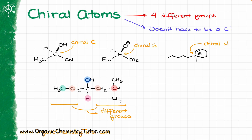So for instance in this case, it looks like my left group and my right group are no different from each other because they are just two CH₂s, but later on in the molecule I have two completely different side chains, which does make those two groups different overall. So the carbon in the middle, that one is very much chiral.